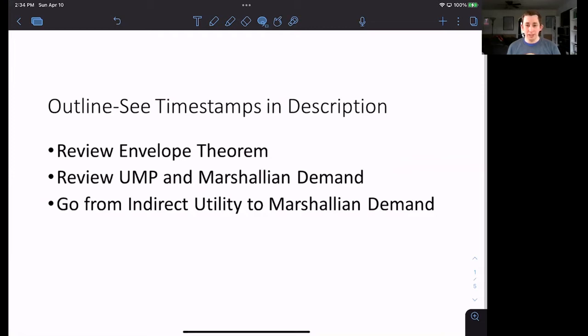So the way we're going to talk about Roy's identity is first we will review both the envelope theorem and the utility maximization problem, including Marshallian demand. And then we are just going to use that indirect utility to derive Marshallian demand. We're going to do it for one good, and then it will be a mirror image for the other good. Timestamps are below if you would like to jump around, but let's go ahead and get started with our review of the envelope theorem.